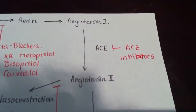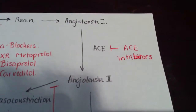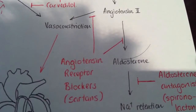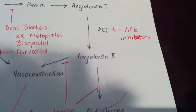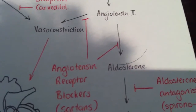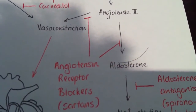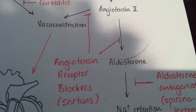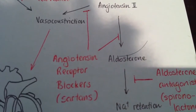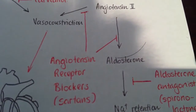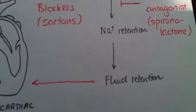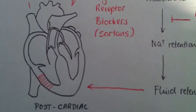When certain people become intolerant towards ACE inhibitors because of dry cough, what we can use as a replacement is angiotensin receptor blockers, or ARBs. Angiotensin receptor blockers don't actually stop the production of angiotensin 2, but what they do is bind onto the receptors preventing the binding of angiotensin 2 to their receptors. In effect, it causes the inhibition of the release of aldosterone, so you don't get sodium retention, fluid retention, and stress on the heart.